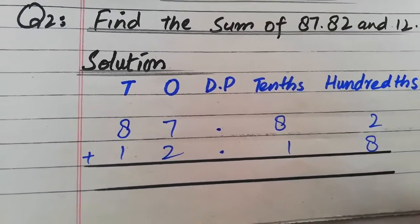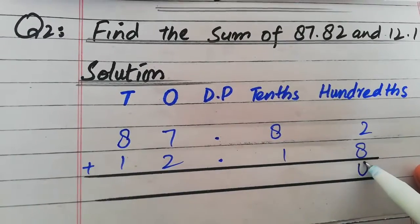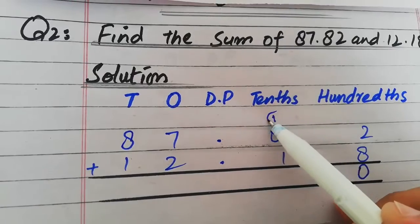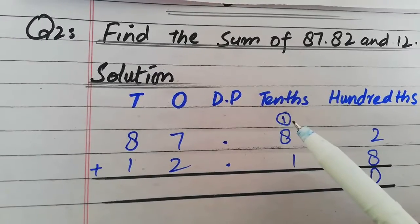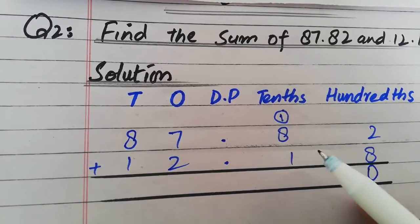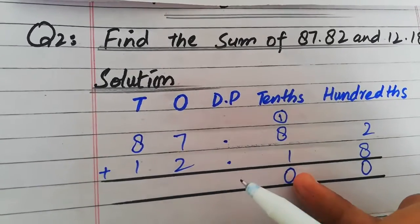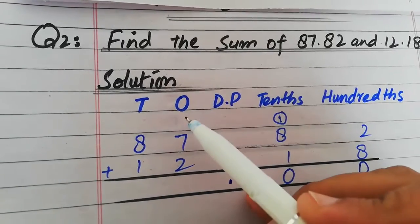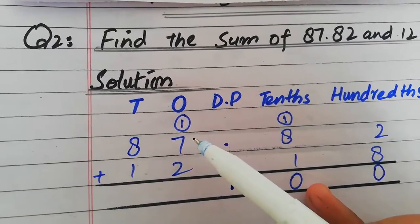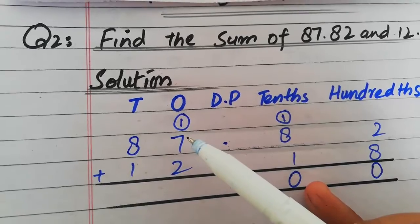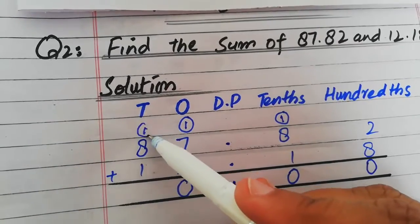پہلے hundredths column plus کریں گے — یہاں پہ carry ہو جائے گا۔ Tens column: one plus eight plus one is equal to ten۔ اس کو plus کریں گے، یہاں بھی decimal۔ Ones column: one plus seven plus two is equal to ten — یہاں پہ zero لکھیں گے اور one carry ہو جائے گا tens میں۔